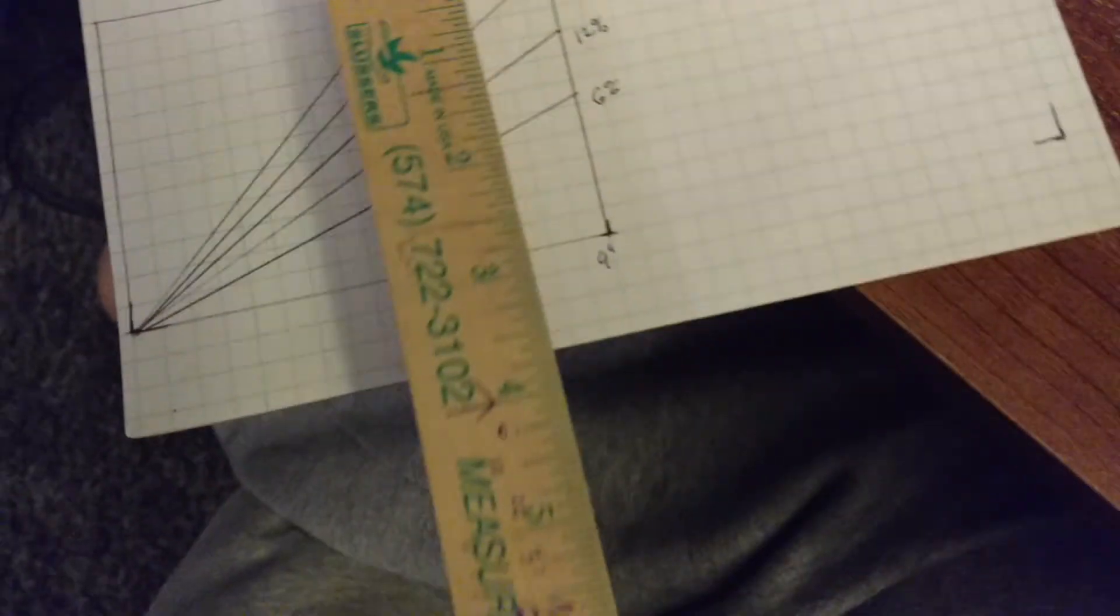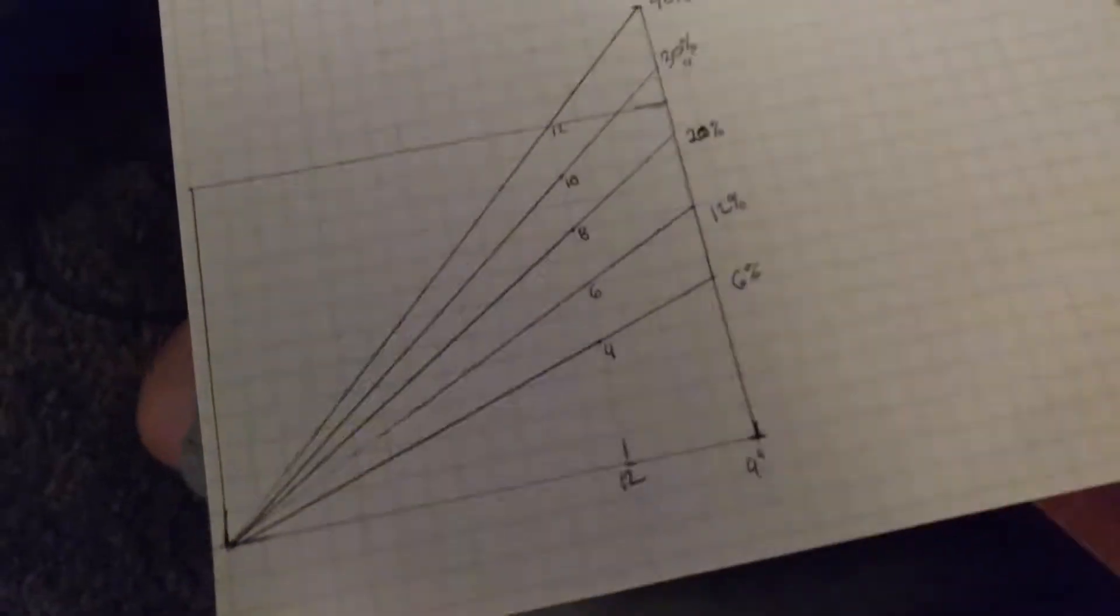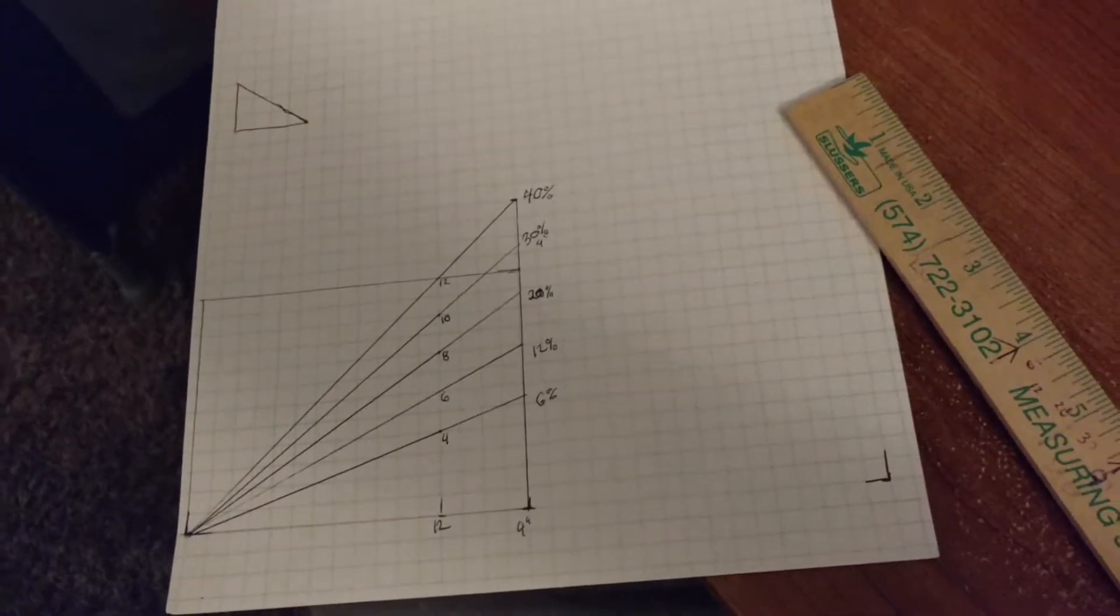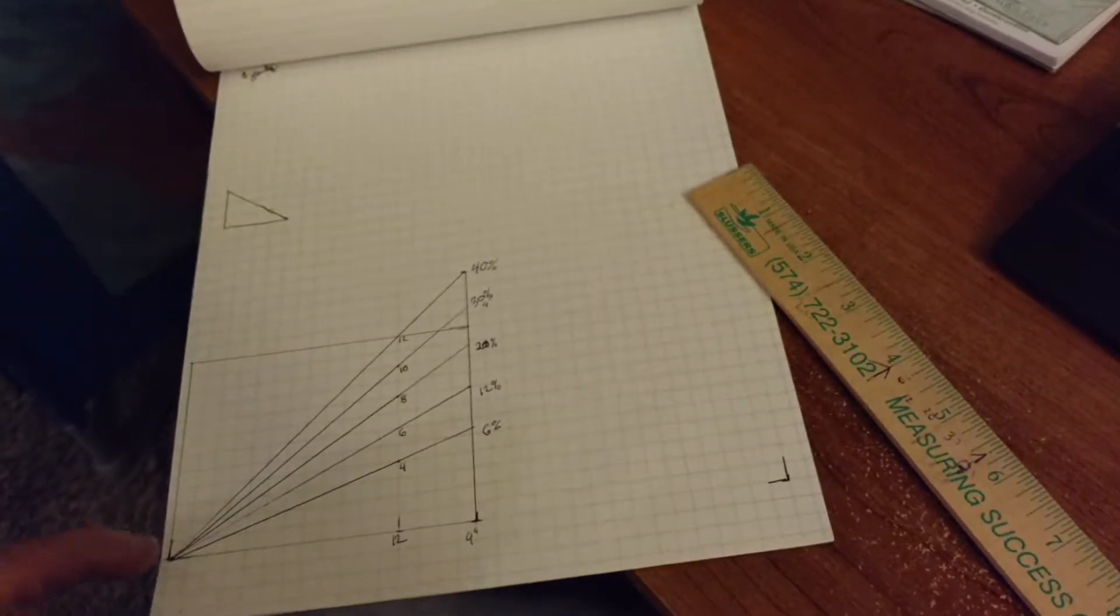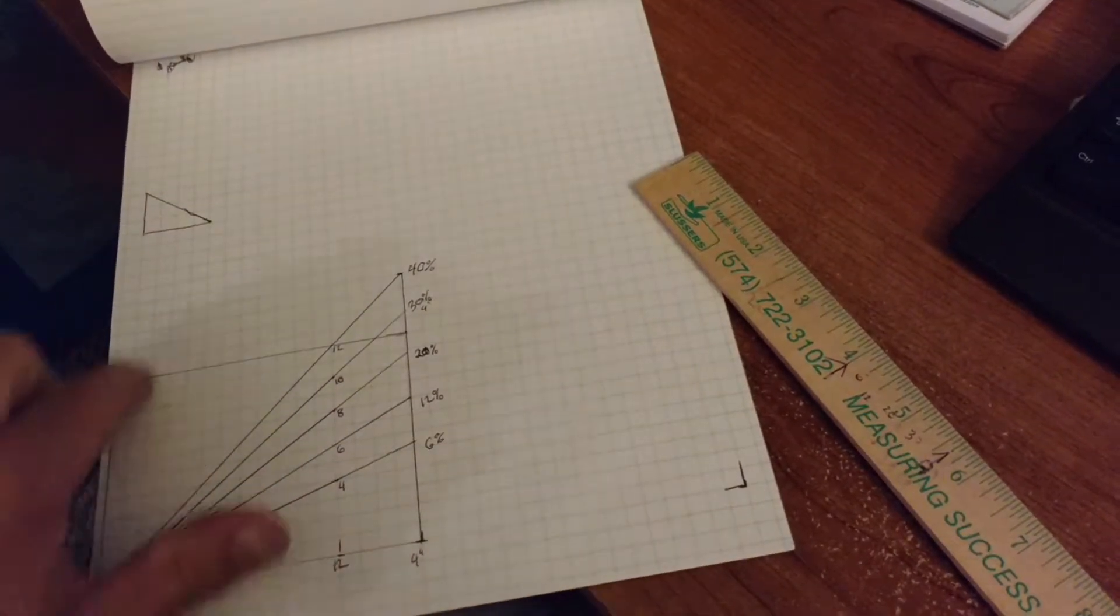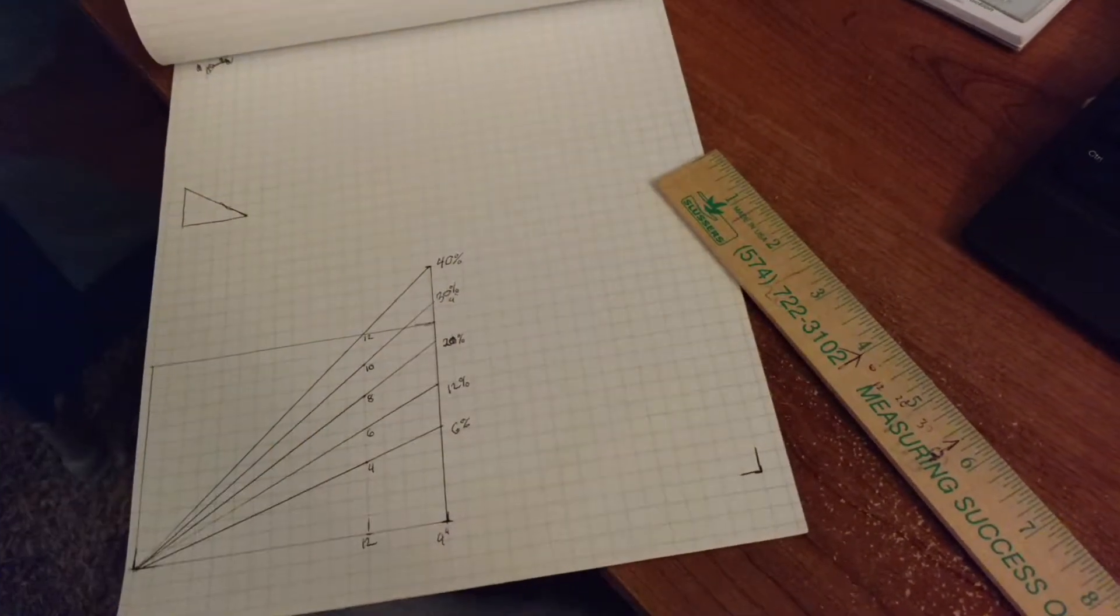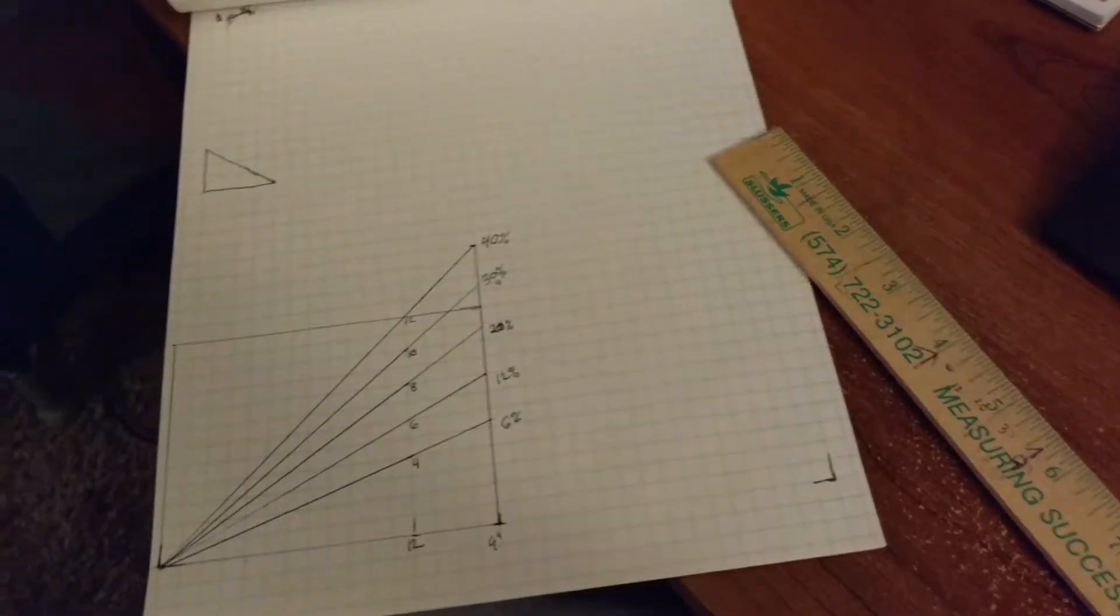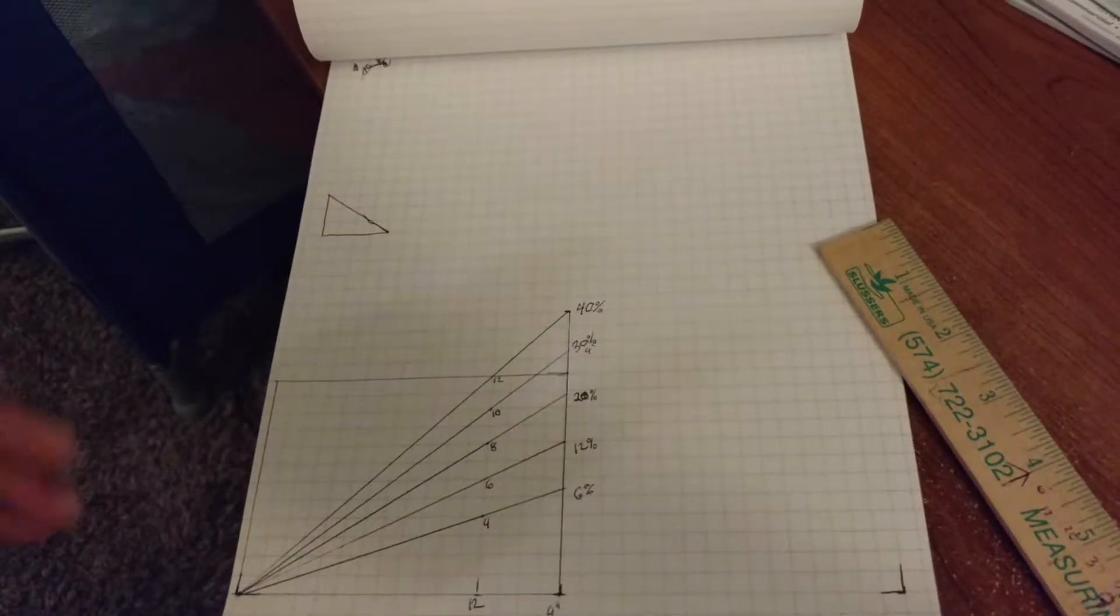A couple other things: you hear people throwing fancy terms out like 'square' and '12/12' and all that. First of all, a square in roofing terms is 10 foot by 10 foot - that's 100 square feet. Typically most manufacturers, it's three bundles; that's a square. Another one is the 12/12, 6/12, 8/12 - what they're referring to is the pitch.